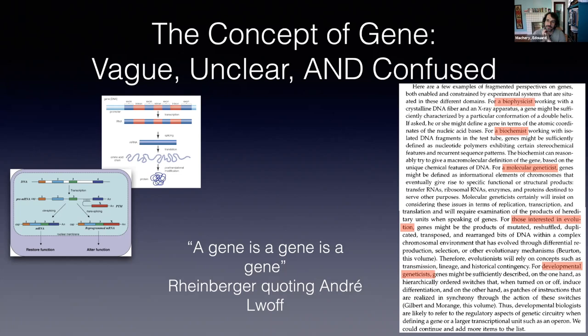For the confusion of the concept: the concept of gene identifies different phenomena. Different parts of the biological community working with the concept of gene are focusing on what Rheinberger calls different epistemic objects — entities characterized with different properties. Molecular biologists and evolutionary biologists are not focusing on really the same type of entities when they use the same concept of gene. Something might count as a gene for one community and not for the other. So there is genuine confusion about what genes are.